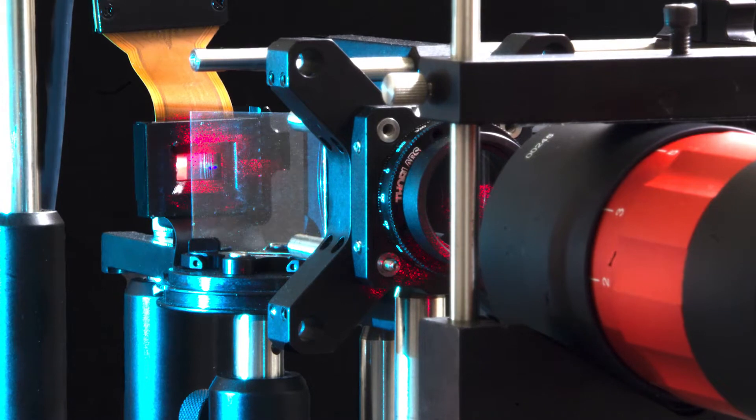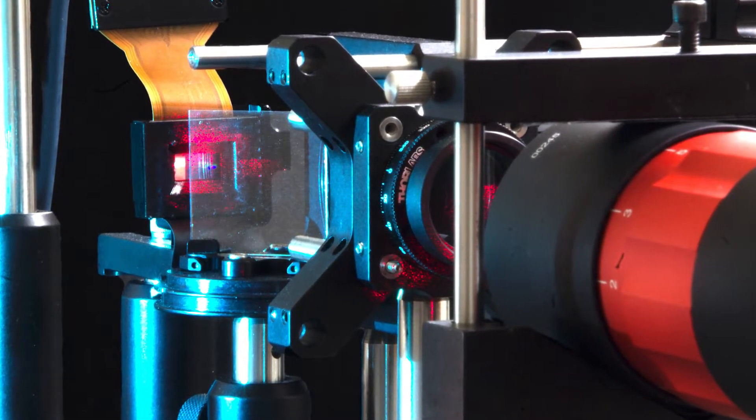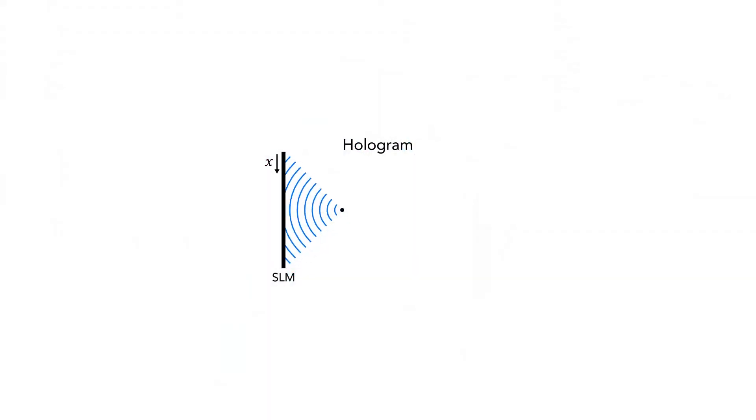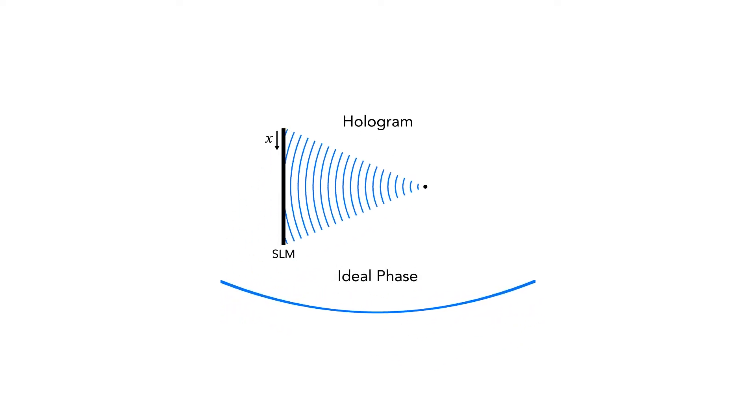One class of CGH algorithms that support view-dependent effects is a holographic stereogram. Starting from the basics, here we see a phase SLM and a point. In order to encode the point, the SLM would display a phase profile that matches that of the wavefront of the point incident on the SLM.